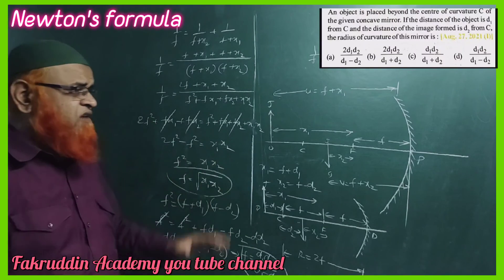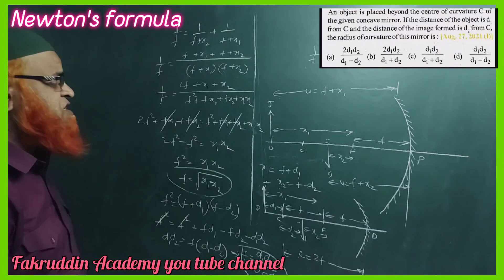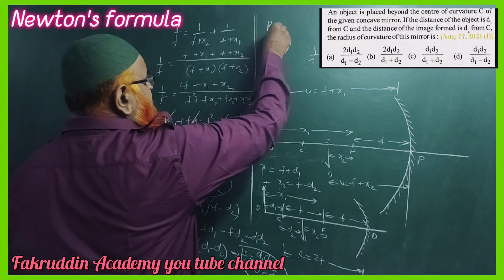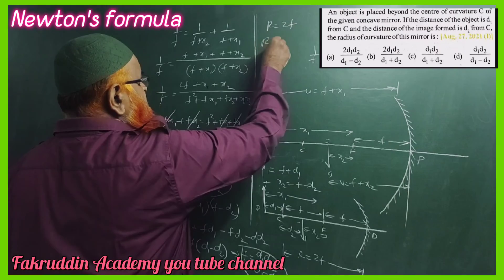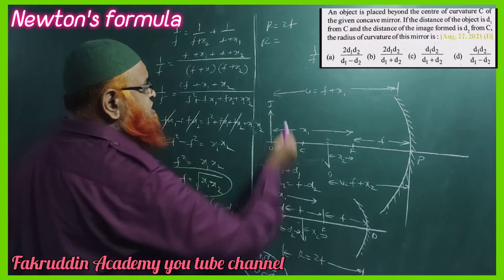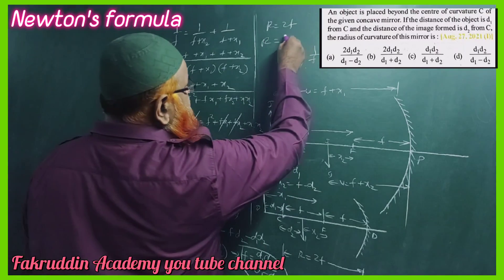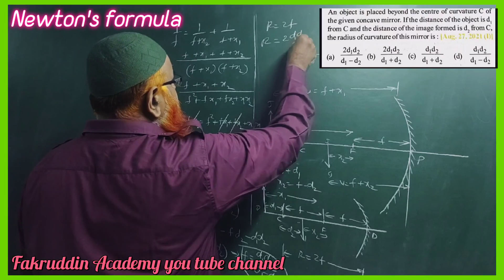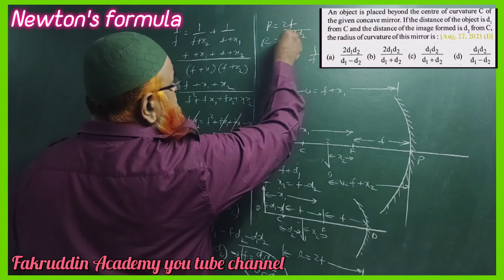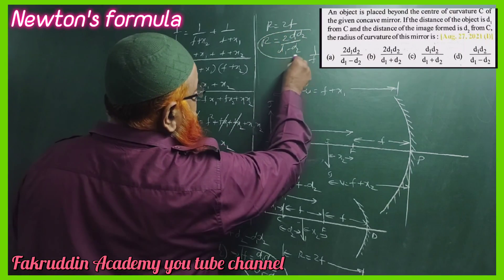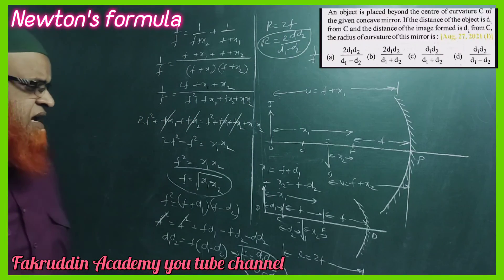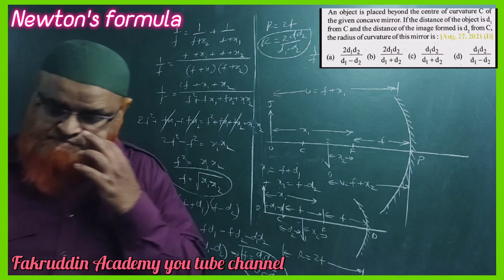The problem asks us to find the radius of curvature. Since the radius of curvature is double the focal length, and we found f = d1d2 / (d1 - d2), the radius of curvature R = 2d1d2 / (d1 - d2). This is the final answer. Thank you very much, have a nice day.